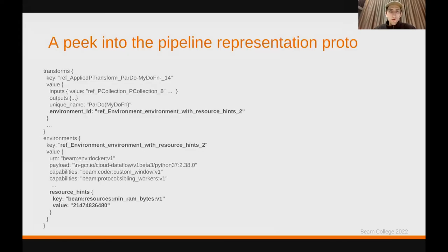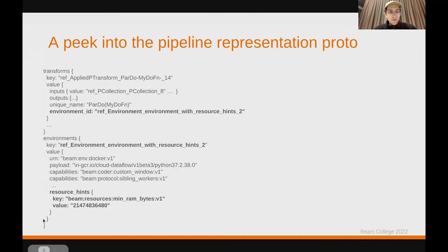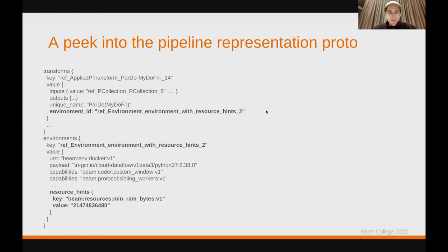If we look into the pipeline representation protocol buffer that gets created when we serialize the pipeline and create the job graph to send to the runner, there is a collection of transforms in the proto and each transform has a particular environment ID assigned to it. Separately, the environments are defined, and if an environment has resource hints it will be reflected accordingly in the protocol buffer messages — indicating that this particular transform needs to be executed in this particular environment.